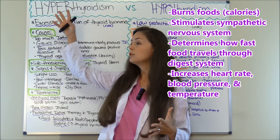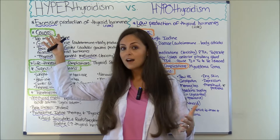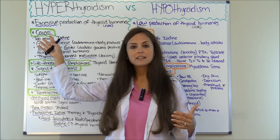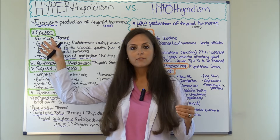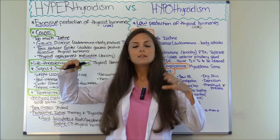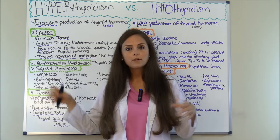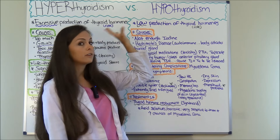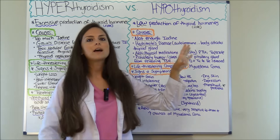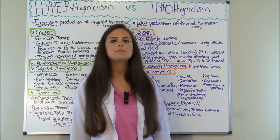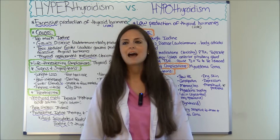If you have too much thyroid hormone, everything runs at an accelerated rate — you'll have a super fast heart rate and super high blood pressure. However, if you have too little, you're going to have a slow heart rate, low temperature, and things like that.